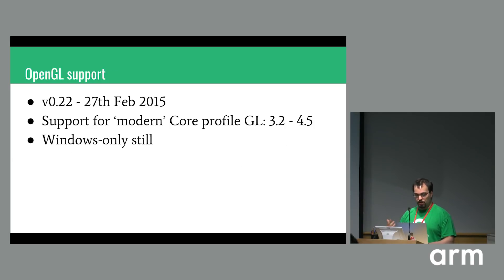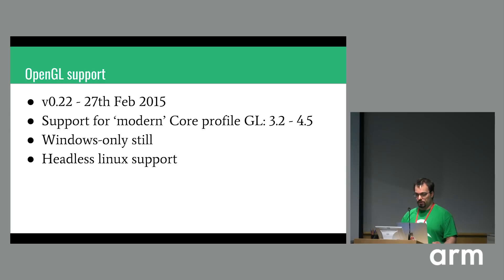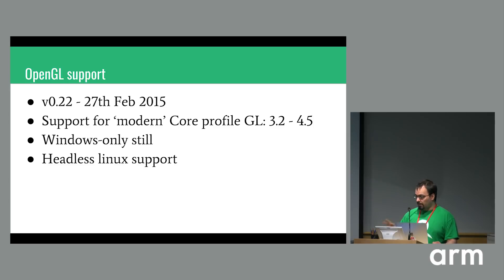OpenGL support was released about a year after the first public release, in February 2015. This is support for modern OpenGL — core profile versions 3.2 to 4.5 plus a few ARB extensions. It was still primarily Windows-only. There was technically Linux support at its core, since not much code was Windows or Linux specific for OpenGL, but the main blocker was that the UI was written in .NET and wouldn't port easily to Linux. So it was only headless Linux support — you could capture from the command line, but you still had to load the frame on a Windows PC.